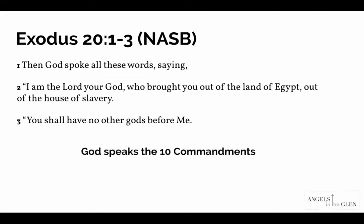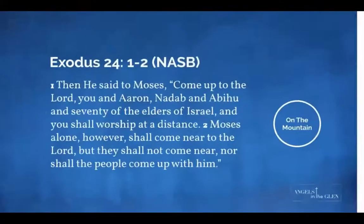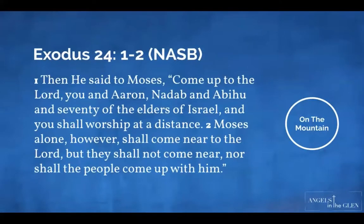After speaking the Ten Commandments, God asks Moses to come up to him on the mountain. Exodus 24 verses 1 and 2: 'Then he said to Moses, come up to the Lord, you and Aaron, Nadab and Abihu, and 70 of the elders of Israel, and you shall worship at a distance. Moses alone shall come near to the Lord, but they shall not come near, nor shall the people come up with him.' God is sanctifying the mountain — it is holy and set apart — giving instructions on how to approach him.